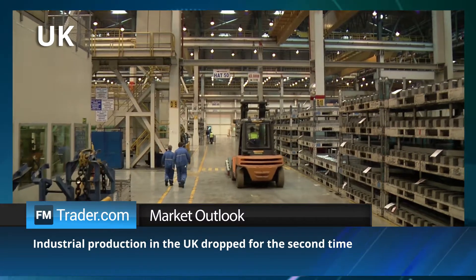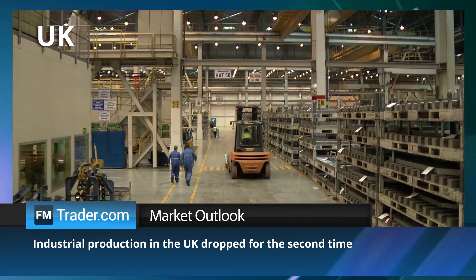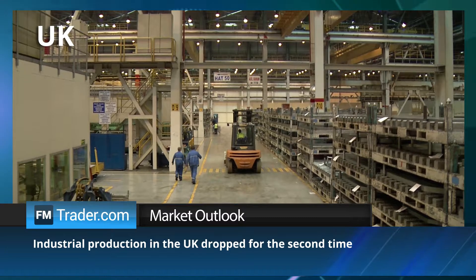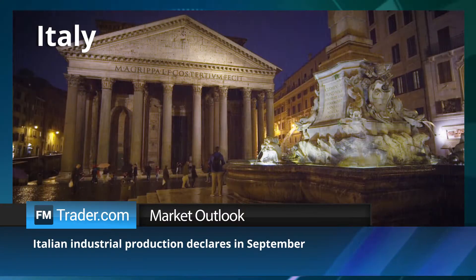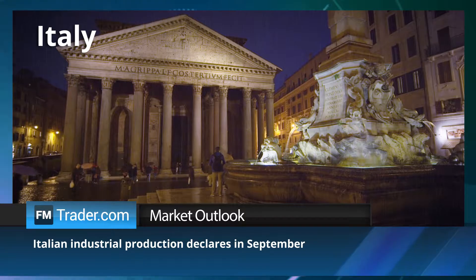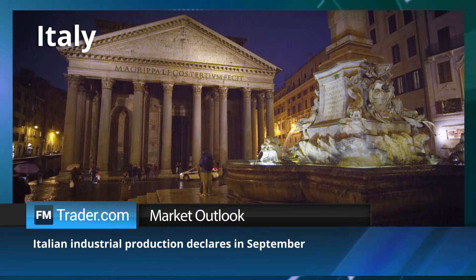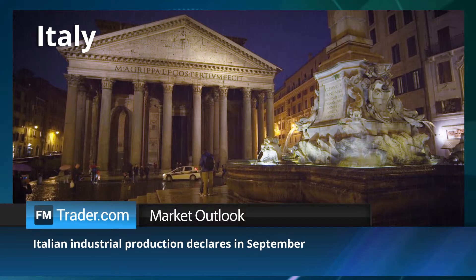Industrial production in Britain contracted by 0.4% over the previous month. Italian industrial production fell by 0.8% from the previous reading of 1.8%, indicating a drop in production.